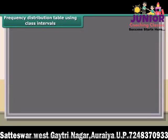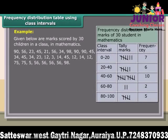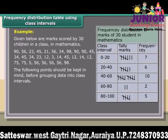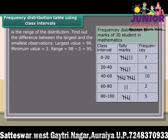Frequency distribution table using class intervals. Given below are marks scored by 30 children in a class in mathematics. The following points should be kept in mind before grouping data into class intervals. When you group data into class intervals, the most important factor to consider is the range of the distribution. Find out the difference between the largest and the smallest observations. The largest value is 98, the minimum value is 3, so the range is 98 minus 3, which equals 95.